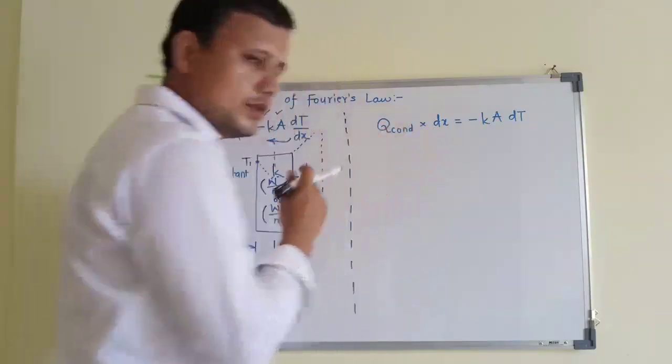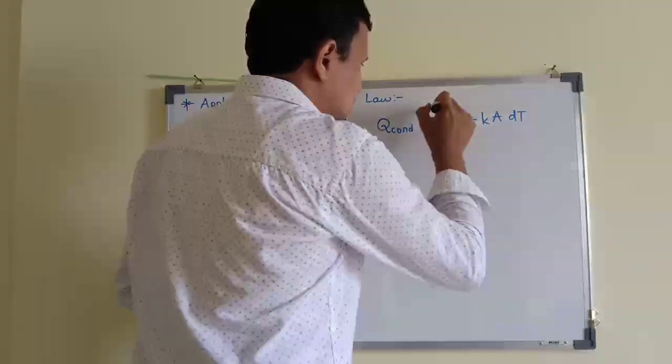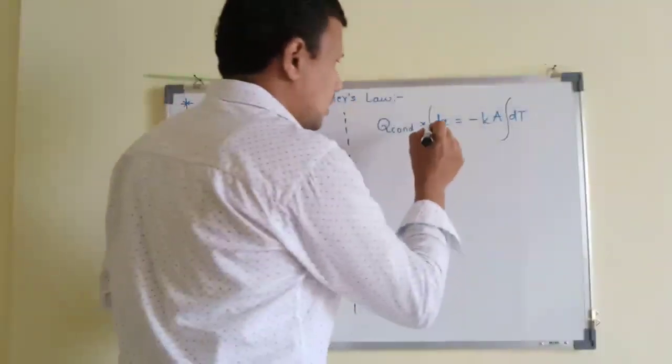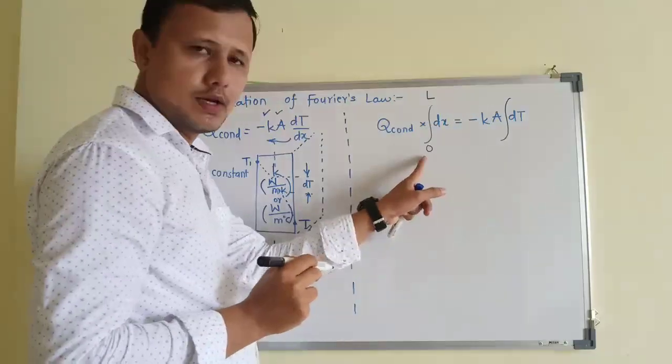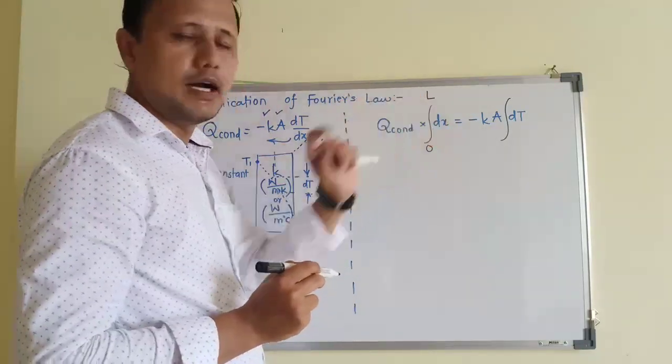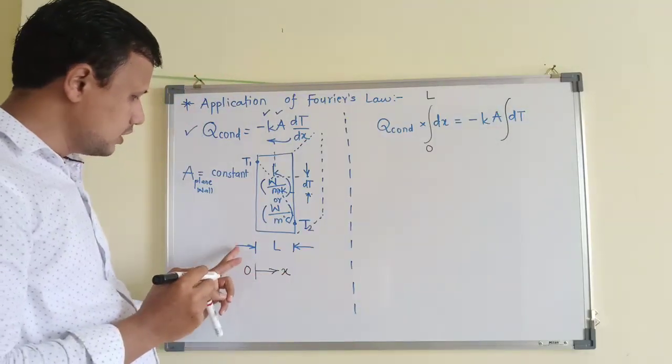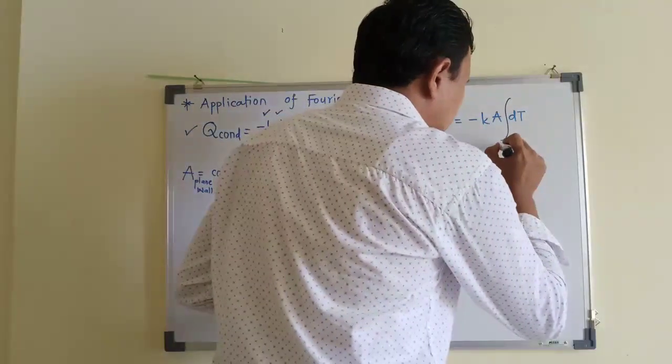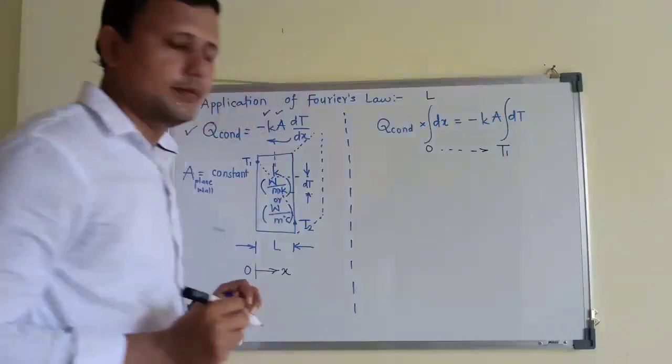So on the basis of this physical understanding we can apply the limits of integration. So when we will integrate it for the entire wall, x changes from 0 to L and that is why 0 is the lower limit of integration, L is the higher limit of integration. On the other hand, at x is equal to 0, how much is the temperature? It is T1. So for x is equal to 0 corresponding to that, this is the limit of integration.